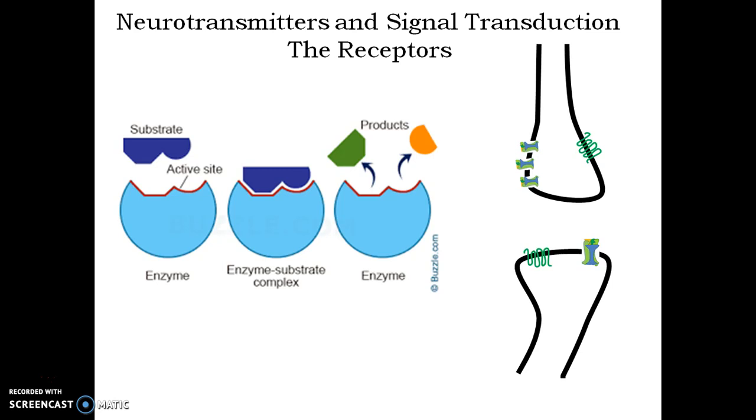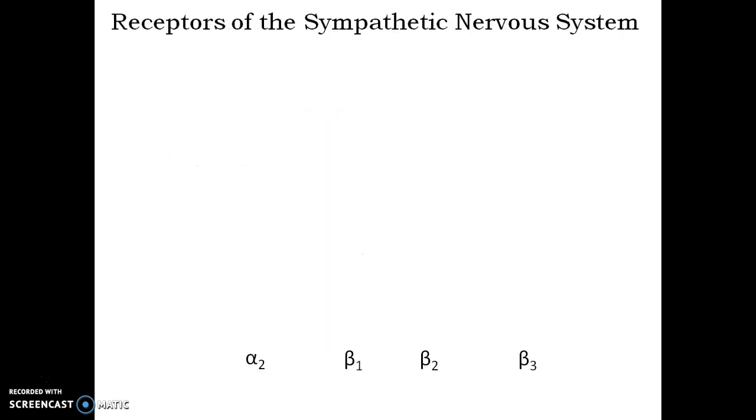Now, the adrenergic nervous system, adrenergic neurons, the organs which respond to the adrenergic stimulation, they all contain second type of receptor that is the single strand seven transmembrane GPCR.